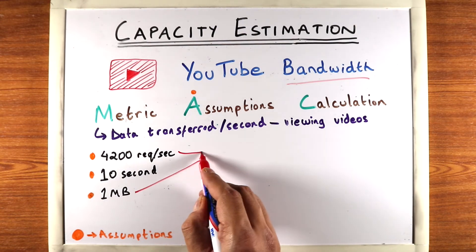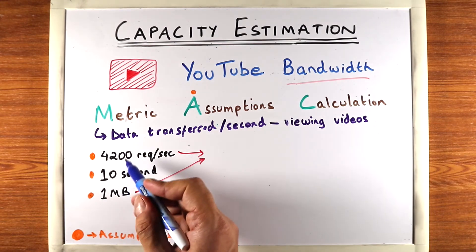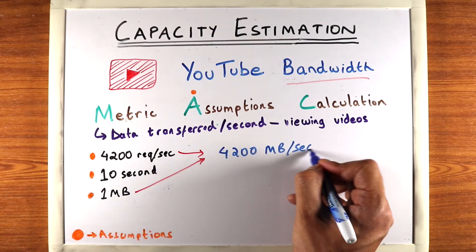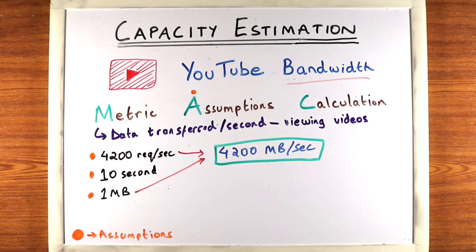Given these two assumptions we can figure out how much data is transferred per second and it's pretty simple. We've made our numbers pretty simple so it's just going to be 4200 megabytes per second. That will be the amount of bandwidth required on average to serve these requests.